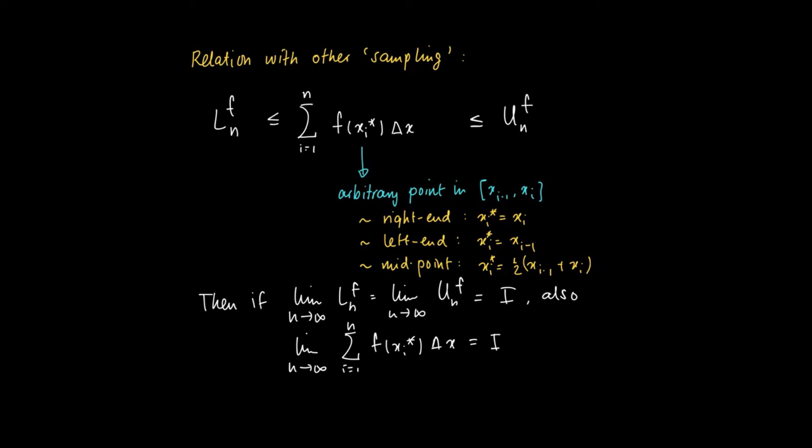So in this sense, it doesn't matter when we know that this limit exists. It doesn't matter what kind of sampling method we use, since these all give rise to the same number, which is the definite integral from a to b of f(x)dx.